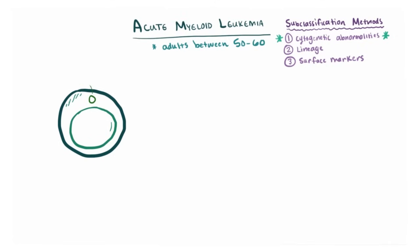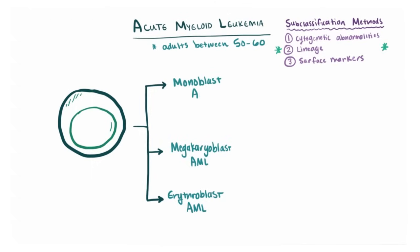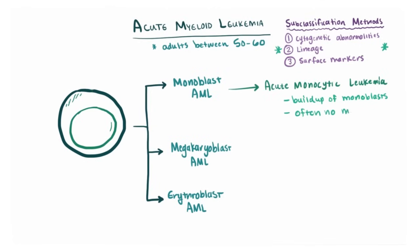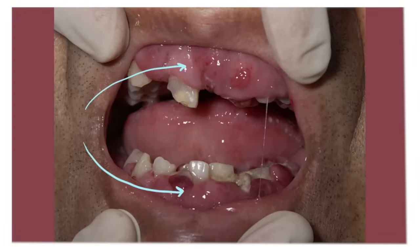We can also characterize AML by lineage. Just like lymphoid blasts can be T or B lymphoblasts, you could have erythroblast AML, megakaryoblast AML, or monoblast AML — all involving proliferation of that cell type. One important subtype is monoblast AML, or acute monocytic leukemia. These monoblasts often lack myeloperoxidase, but a classic sign to look for instead is infiltration of the patient's gums — notice in this image how the patient's gums are clearly swollen, which is a classic sign of acute monocytic leukemia.